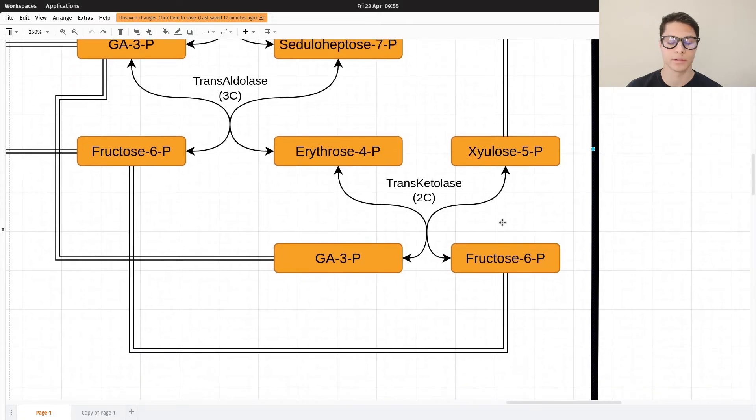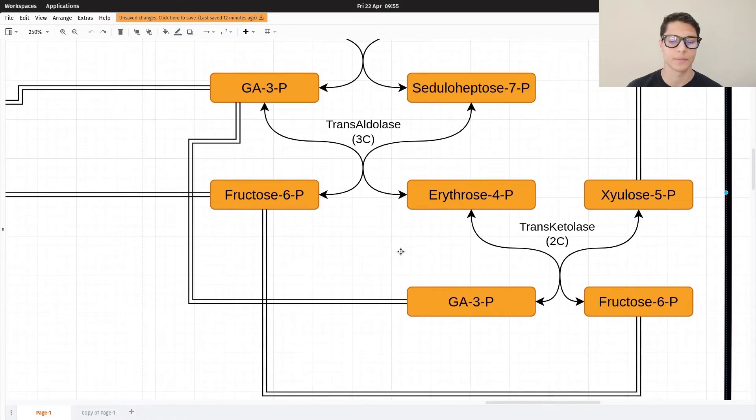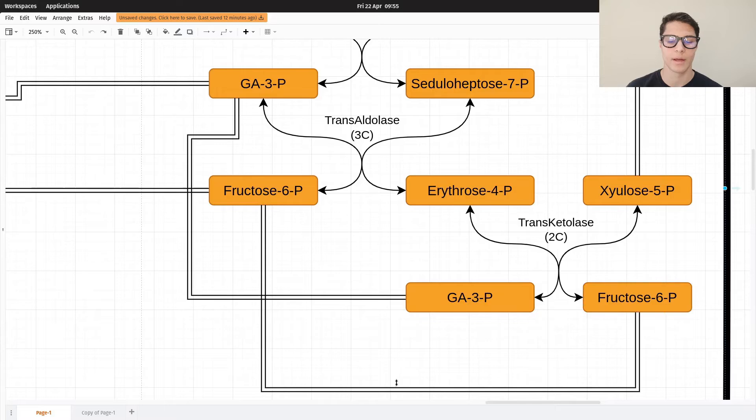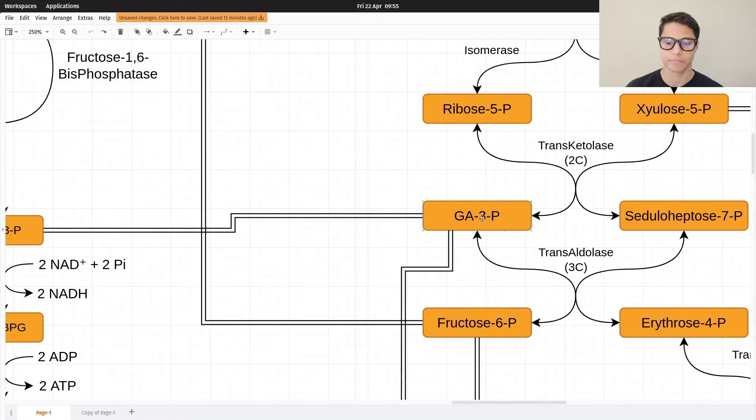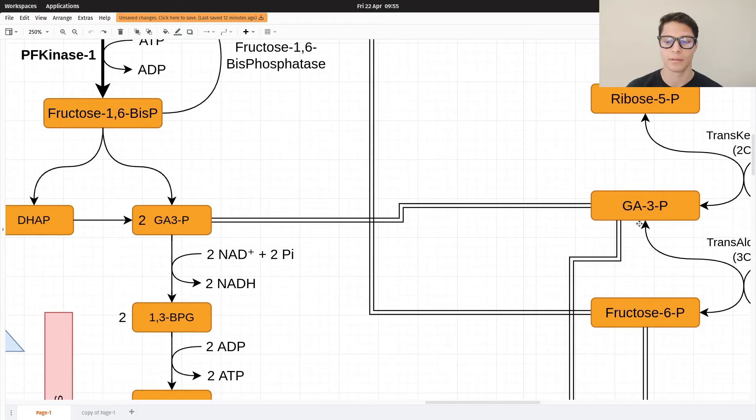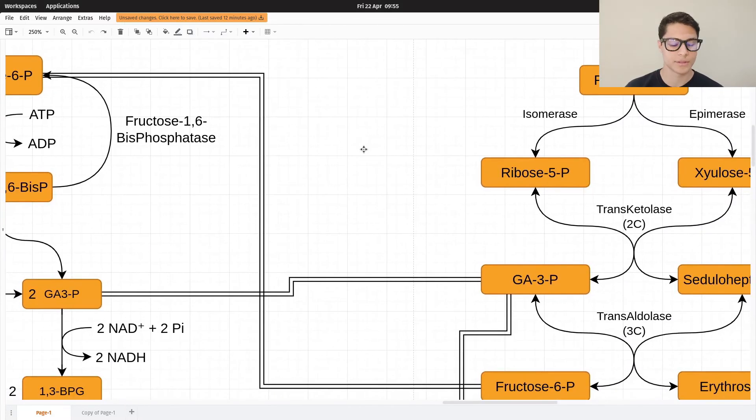But wait a second. We know these guys. They are metabolites of glycolysis. We already discussed them. And as you can see, if you follow the arrows, they lead into glycolysis steps. So what does this mean?